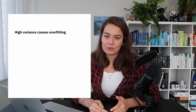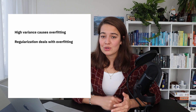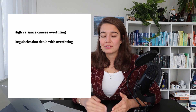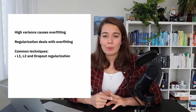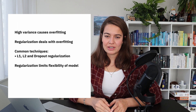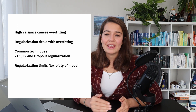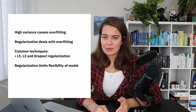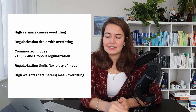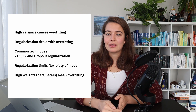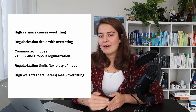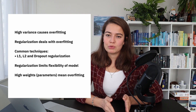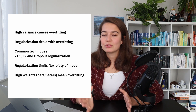So just to recap: we saw that high variance causes overfitting, and one very commonly used approach to dealing with overfitting is regularization. The common regularization techniques are L1, L2, and dropout regularization. We know that regularization is a way to limit the flexibility of our model — it does that by limiting certain parameters. High parameters or high weights mean overfitting because they represent the amount of value we put to the input features in our model. We don't want to exaggerate any input feature's importance — we want our model to be able to generalize well.